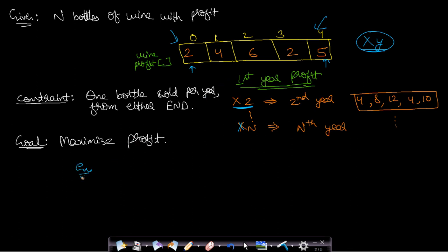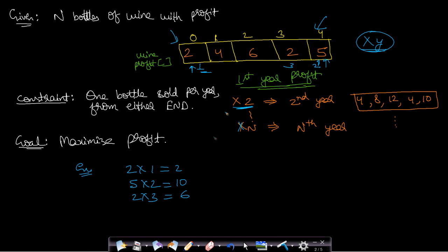Let us solve this example for better understanding. We have five bottles with profit margins, and say we sell bottle 2 in the first year — profit is 2×1 = 2. If we sell 5 in the second year, profit is 5×2 = 10. If we sell 2 in the third year, profit is 2×3 = 6. If we sell 4 in the fourth year, profit is 4×4 = 16. We are left with 6, sold in the fifth year: 6×5 = 30. Adding all profits gives 64.